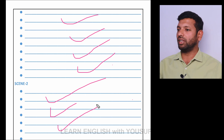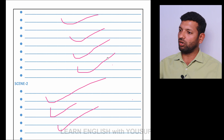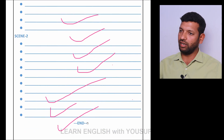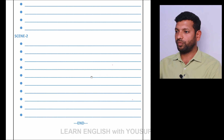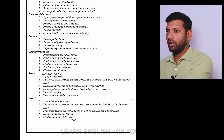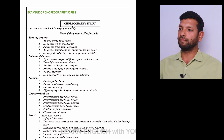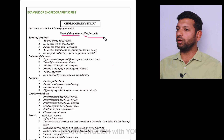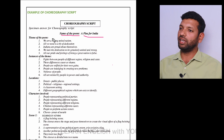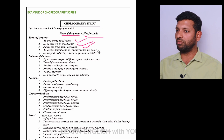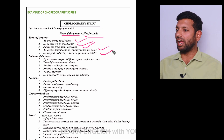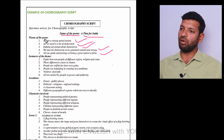Finally there is an end — scene one, scene two, and the ending. Now let us check the best model of the choreography script. First, you have to write the name of the poem: 'A Plea for India.' The theme of the poem: we are all a strong united nation, all we need is a bit of dedication. Indians are proud about themselves, but we lack the dedication to be genuinely united and strong, and all our pride and feelings of being a great nation are false. This is the theme of the poem.